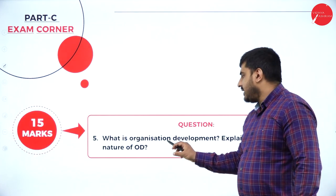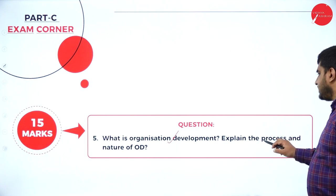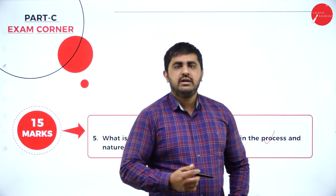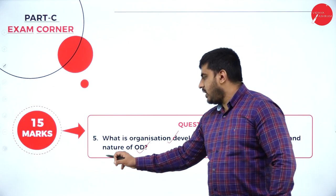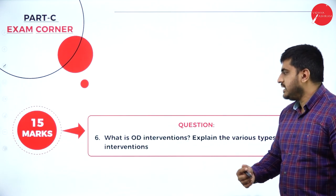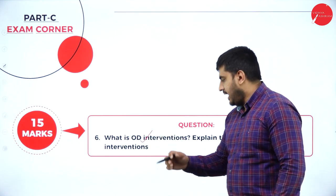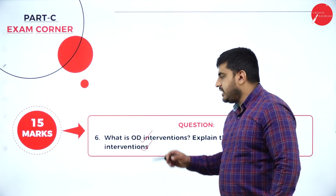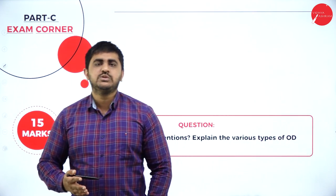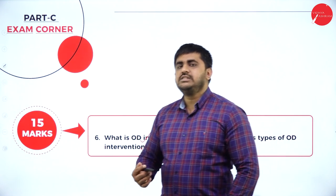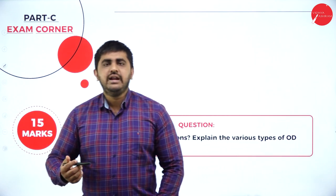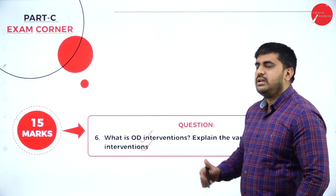Next 15-mark question: what is organizational development? Explain the process and nature of OD. Give the meaning of OD, then explain the seven different steps in the OD process, and the nature as specified in the notes. Following that: what is OD intervention and explain the various types of OD interventions. Give the definition of OD intervention, then explain the four types: human process intervention, strategic intervention, technostructural intervention, and human resource management interventions.